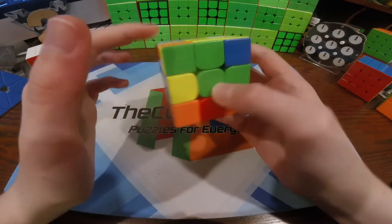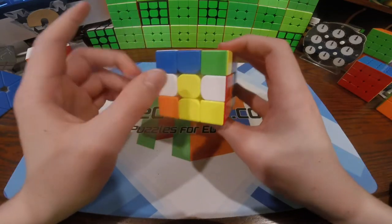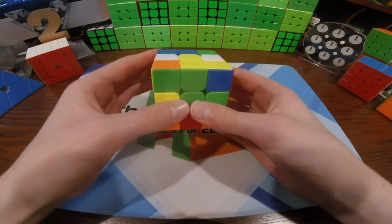During inspection, I saw the cross pieces were here, here, here, and here. I also saw this edge in this corner, which I'm going to make an X cross with.